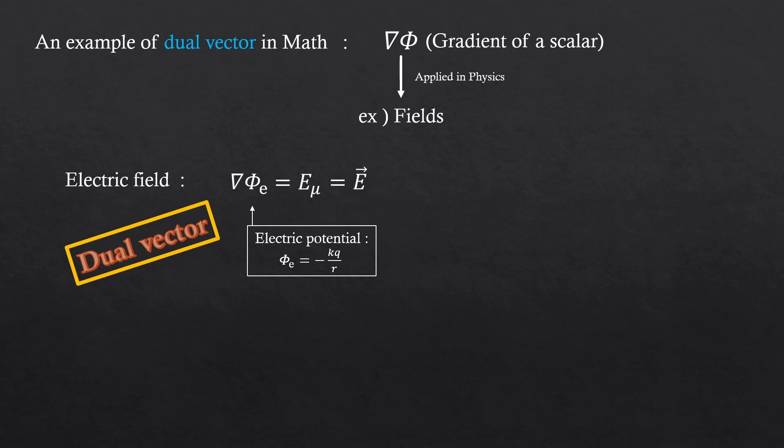Electric fields were dual vectors. In fact, we visualize the electric fields in this way, as if it's some kind of a background object.